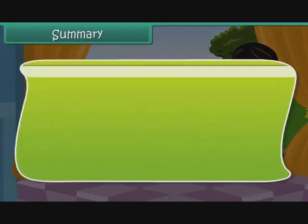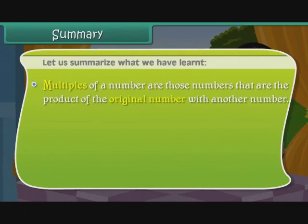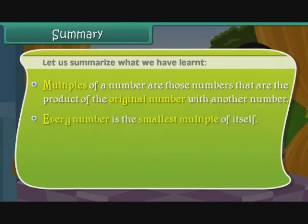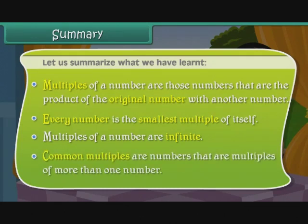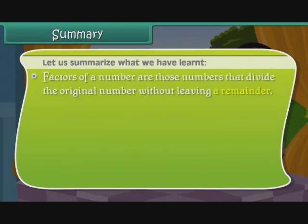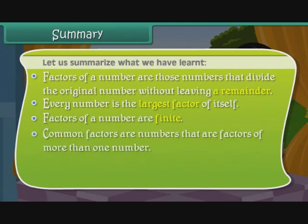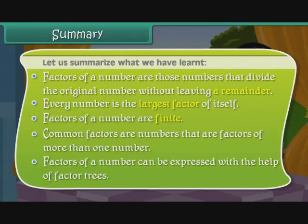Summary: Multiples of a number are those numbers that are the product of the original number with another number. Every number is the smallest multiple of itself, and multiples of a number are infinite. Common multiples are numbers that are multiples of more than one number. Factors of a number are those numbers that divide the original number without leaving a remainder. Every number is the largest factor of itself, and factors of a number are finite. Common factors are numbers that are factors of more than one number. Factors of a number can be expressed with the help of factor trees.